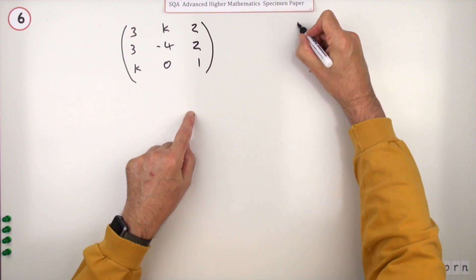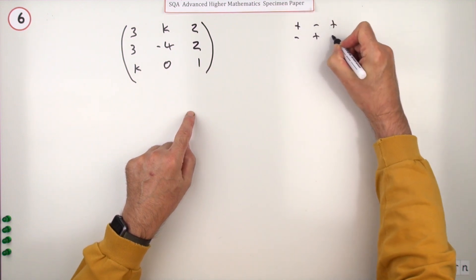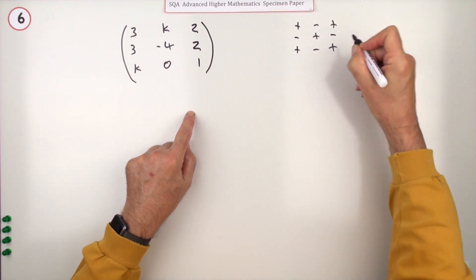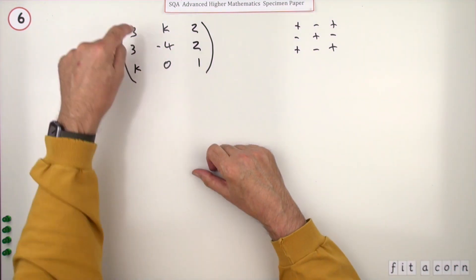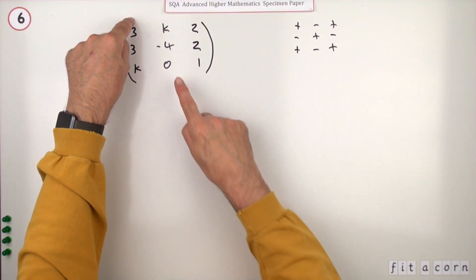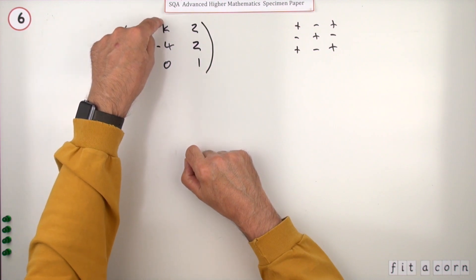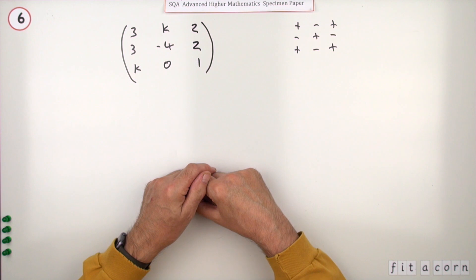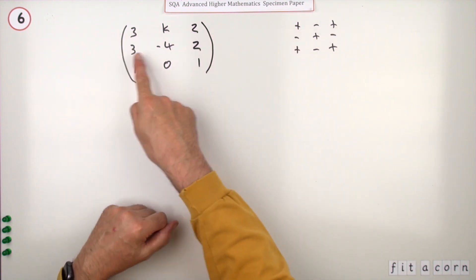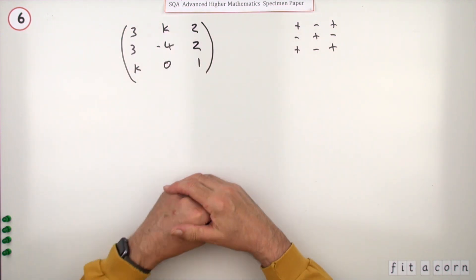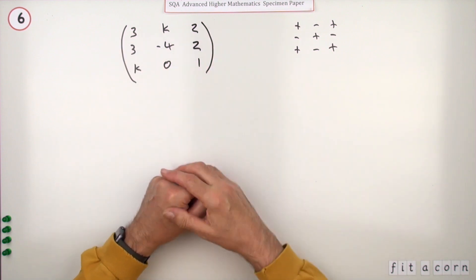For a 3x3 matrix the signs go like this: plus, minus, plus, minus, plus, minus, plus, minus, plus. So the 3 when it multiplies its minor will be multiplying a positive number, the k when it multiplies its minor will be multiplying a negative one, and so on. You use that pattern no matter which of these you use.